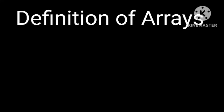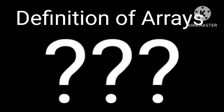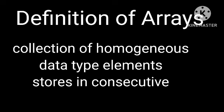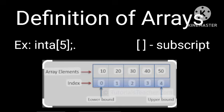Let us discuss the definition of an array. An array is a collection of homogeneous data type elements which are stored in consecutive memory locations. For example, int a[5] with array elements 10, 20, 30, 40 having index numbers 0, 1, 2, 3, 4.